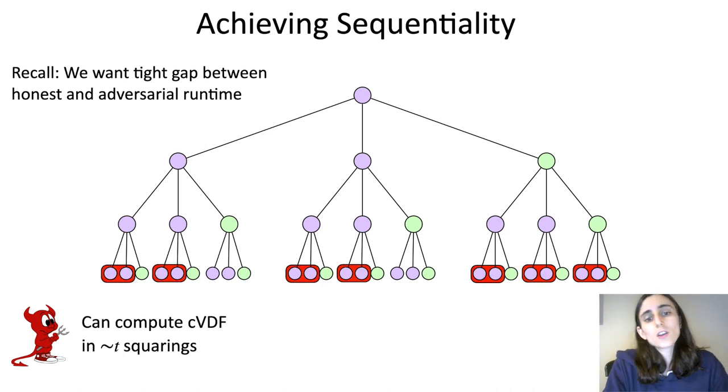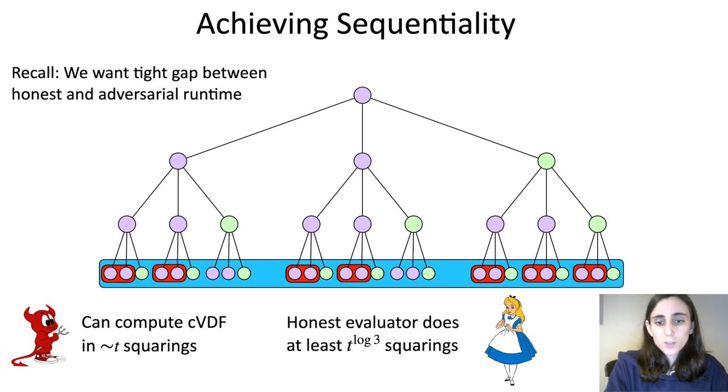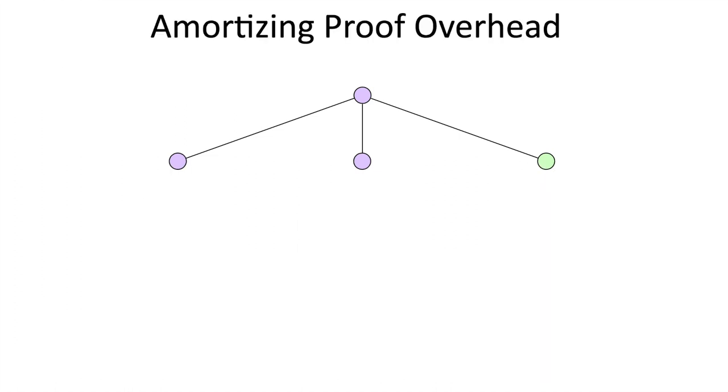If we look at this tree, the adversary essentially only needs to do T squarings to compute the value of the root. But the honest person does all of these leaves, which is much more. In fact, this is a polynomial gap, which is not good for us. We really want a tight gap here. And the problem is that we introduced too many proof nodes into this tree that only the honest guy needs to compute, but the adversary doesn't.